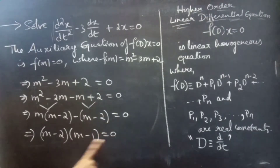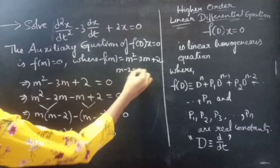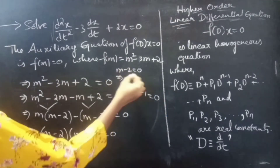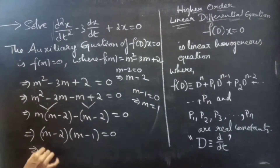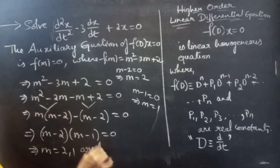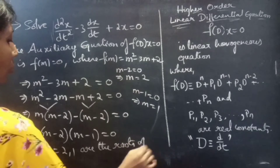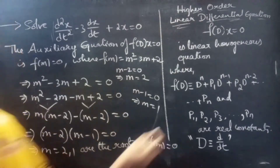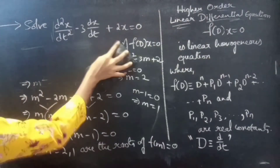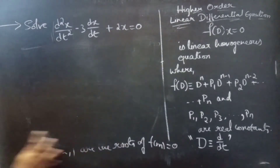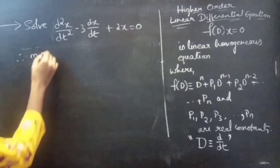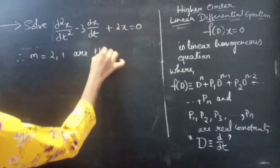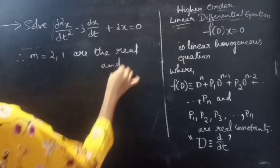Since (m minus 2) is common in both terms, factor to get (m minus 2)(m minus 1) equals 0. Setting each factor to zero: m minus 2 = 0 gives m = 2, and m minus 1 = 0 gives m = 1. Therefore m = 2 and m = 1 are the real and distinct roots of f(m) = 0.